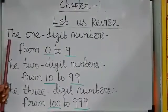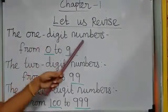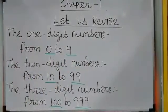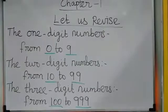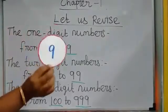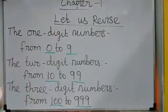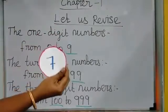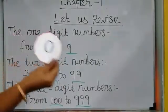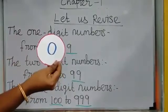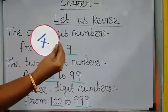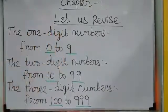The first one: 1-digit numbers. 1-digit numbers are from 0 to 9. For example, 9 is a 1-digit number. 7 is also a 1-digit number. 0 is also a 1-digit number. 4 is also a 1-digit number.